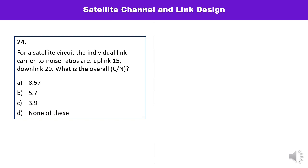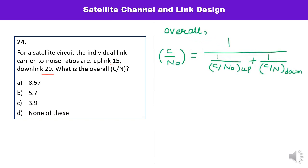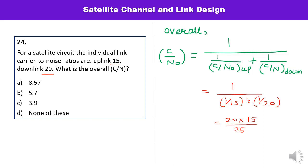Question number 24: for a satellite circuit, the uplink C/N = 15 and downlink C/N = 20; calculate the overall C/N. The overall C/N = 1/(1/15 + 1/20) = (20×15)/(20+15) = 300/35 = 8.57. This is option A, which is the correct answer.